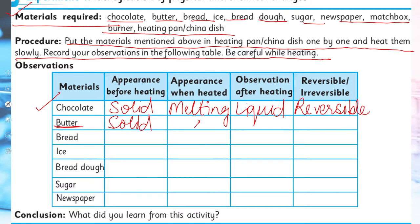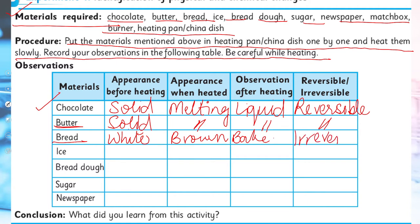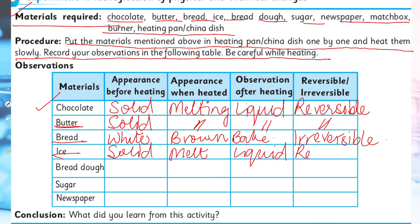Butter is also solid, then melts when heated, becoming liquid — and it is also a reversible change; only its state changes. Bread: before heating it is white in color, but after heating it turns brown — it becomes baked. This is an irreversible change; you cannot reverse it. Ice: before heating it is solid, then it melts and becomes liquid — this is a reversible change.